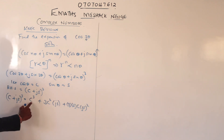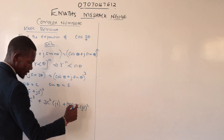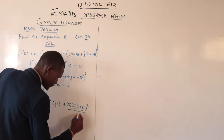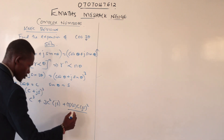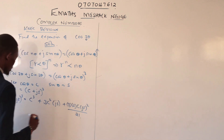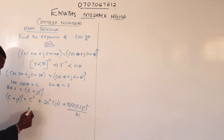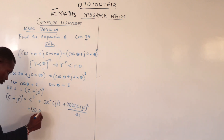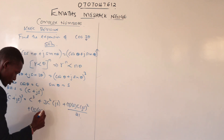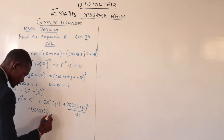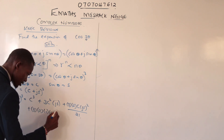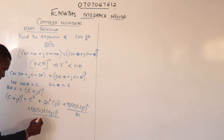Here c reduces in power as js increases in power. The next term involves dividing by 2 factorial. The last term has the power of c drop to zero — anything to the power zero is one — so we are left with (js)³ divided by 3 factorial.